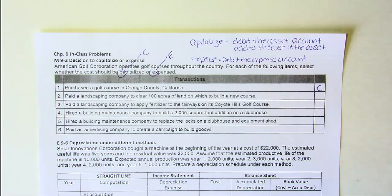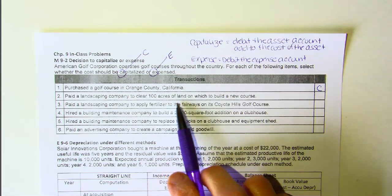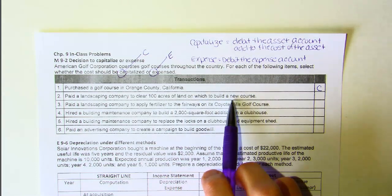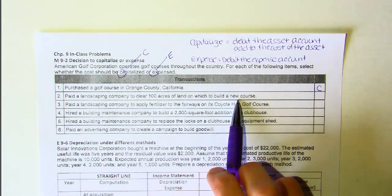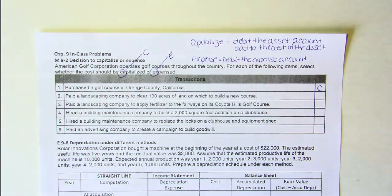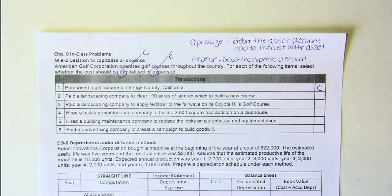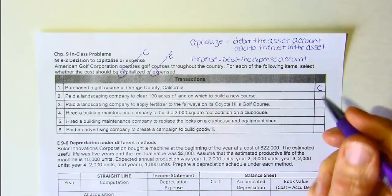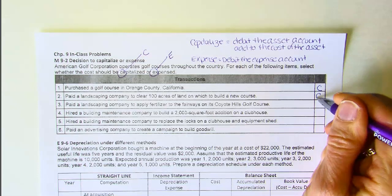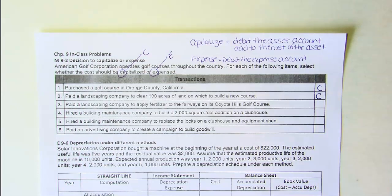Number two: paid a landscaping company to clear 100 acres of land on which to build a new course. The rule is that all reasonable and necessary costs to acquire and prepare an asset for use should be recorded as a cost of the asset. Clearing the land is part of preparing it for use, so we should capitalize it and debit the asset account.